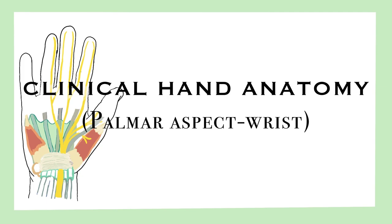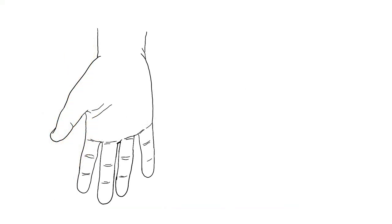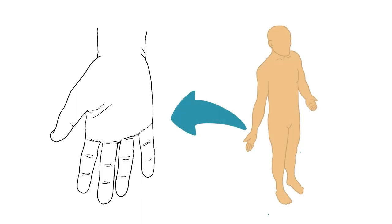We'll focus on palmar aspect and the wrist. Before we start, let's talk about the position of the hand. The position is based on the normal anatomical position, which is the palm pointing forward while the fingertips are in the downward position and the thumb is pointing outward, which is laterally.